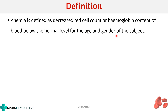Students often forget to mention age and gender in the definition. Why is it important? Because the normal values for different age groups and for different genders are different. So you have to mention that it is below the normal level for the age and gender of the subject.